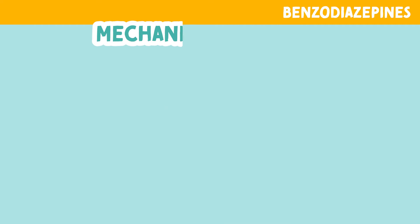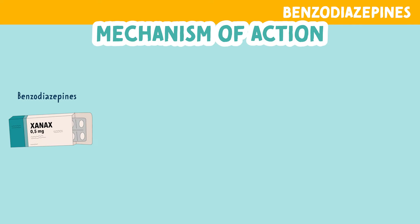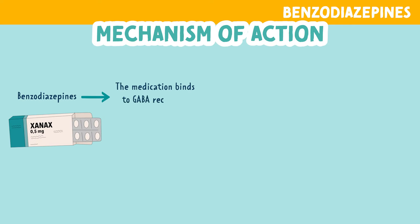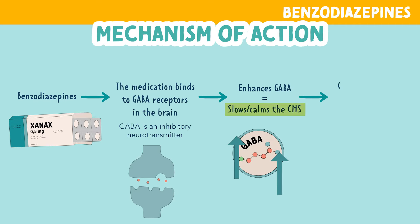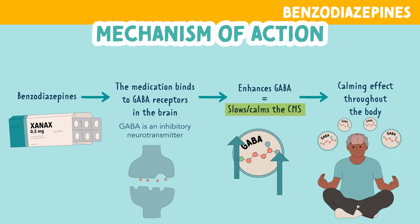Let's dive into the mechanism of action of benzodiazepines. When the medication enters the body, it binds to GABA receptors in the brain. GABA is an inhibitory neurotransmitter which slows and mediates the activity of the brain. When the medication binds to these neurotransmitters, GABA's inhibitory actions are enhanced, meaning a calming effect sets in, leading to central nervous system depression and a more settled state of mind and body.